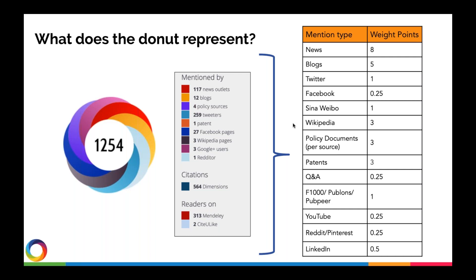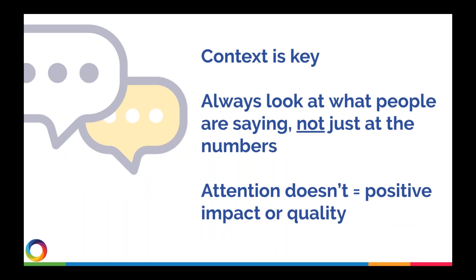The weighting also takes other factors into account — for example, if you tweet about your own research a hundred times, we still only count that once toward your Altmetric attention score. If the BBC News or the New York Times cites your work, that carries heavier weight than a local news station. We always encourage people to look beyond the score because context is key — a high Altmetric attention score does not mean positive attention or an indication of research quality. The number just represents volume of attention: how many, not why.